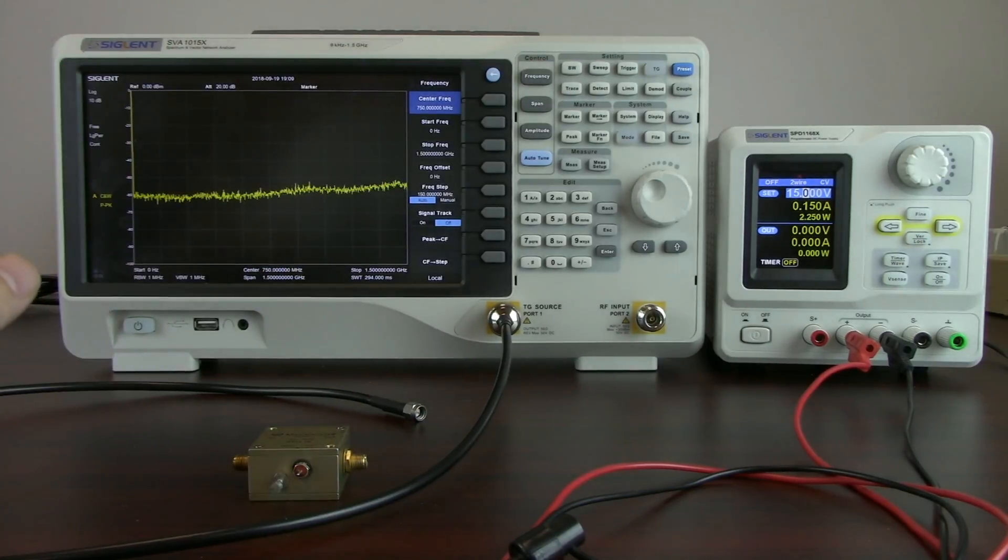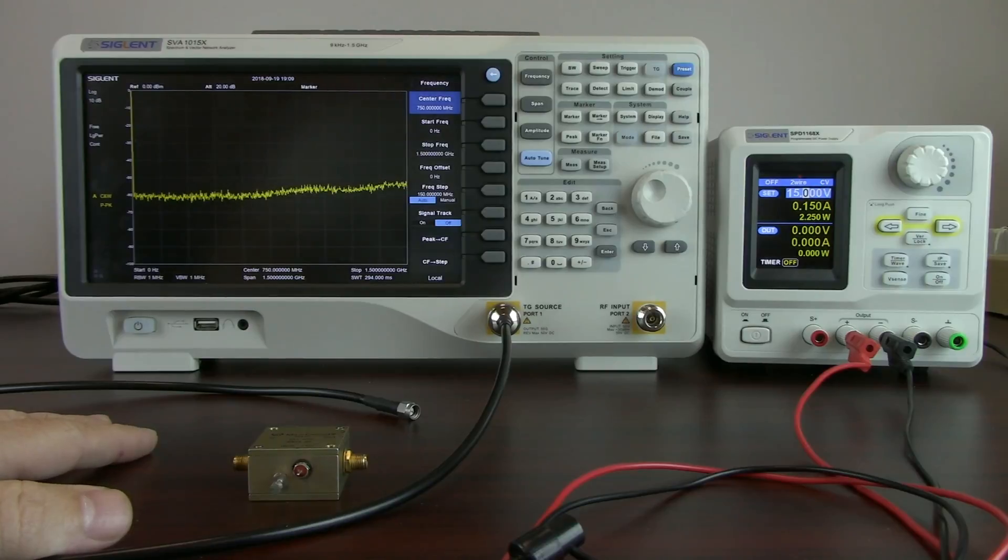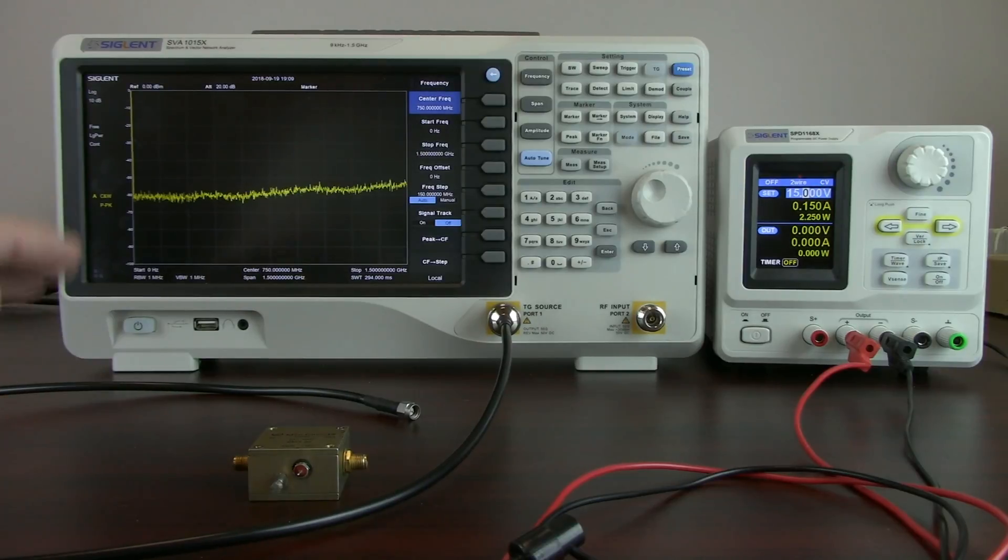I'm going to be using the SVA-1015X Spectrum and Vector Network Analyzer. This actually has the VNA option or Vector Network Analyzer option. And that's the option that we're going to be using to perform this VSWR test.